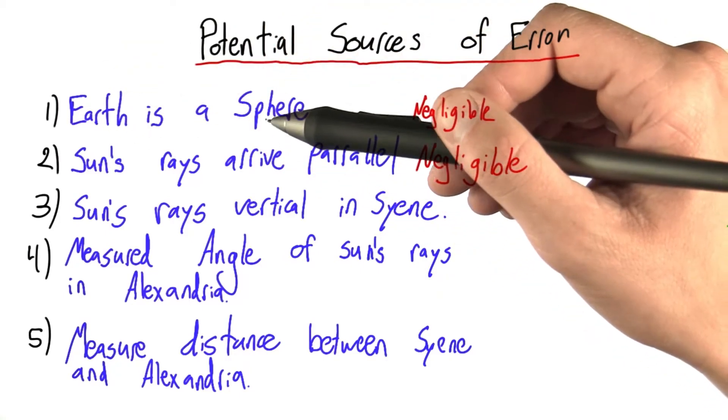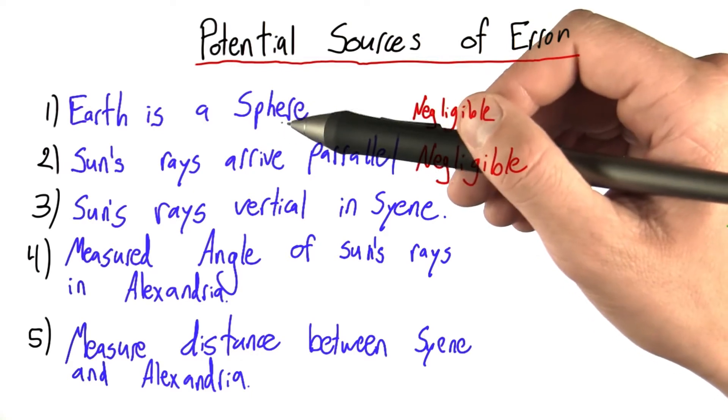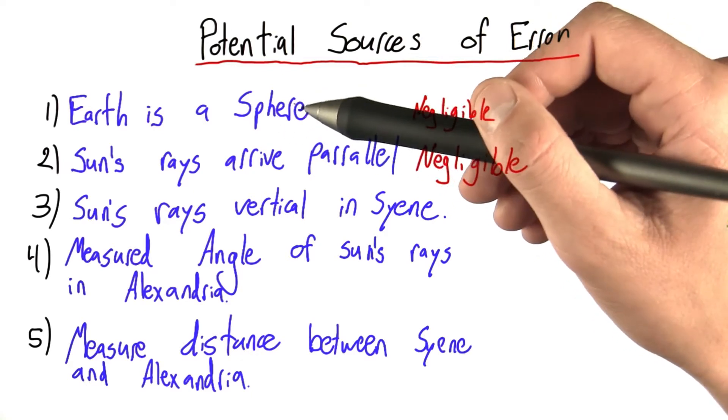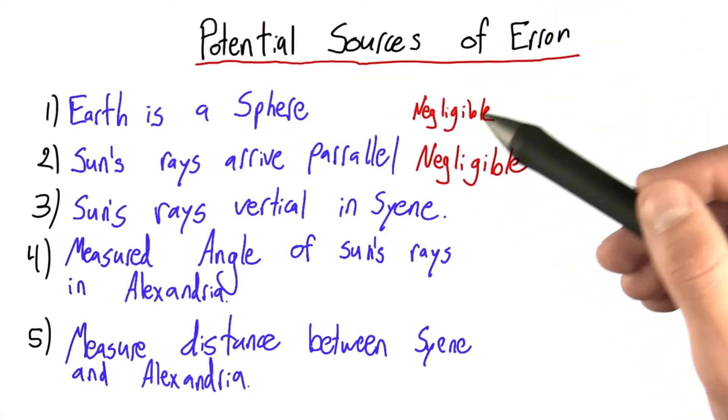The fact that the Earth is a sphere, well, we decided that's not 100% true, but the Earth is so close to spherical that any error it introduces is negligible.